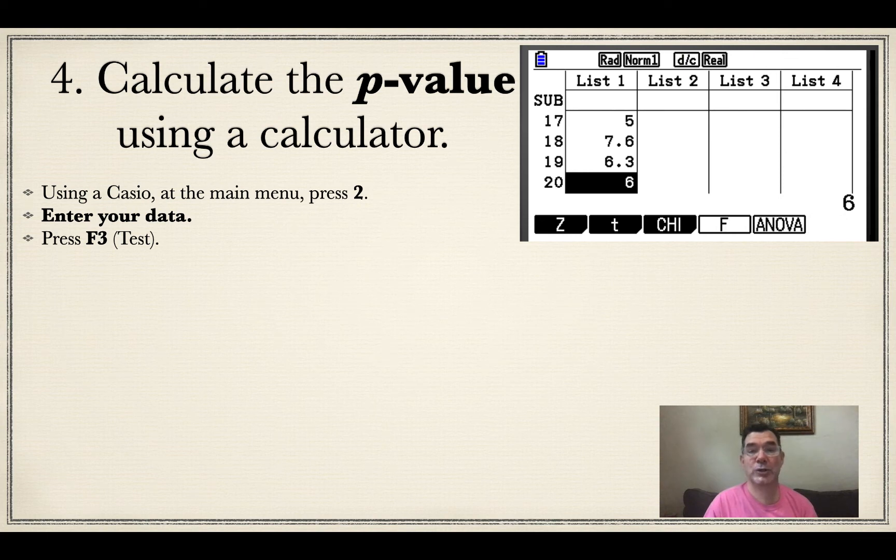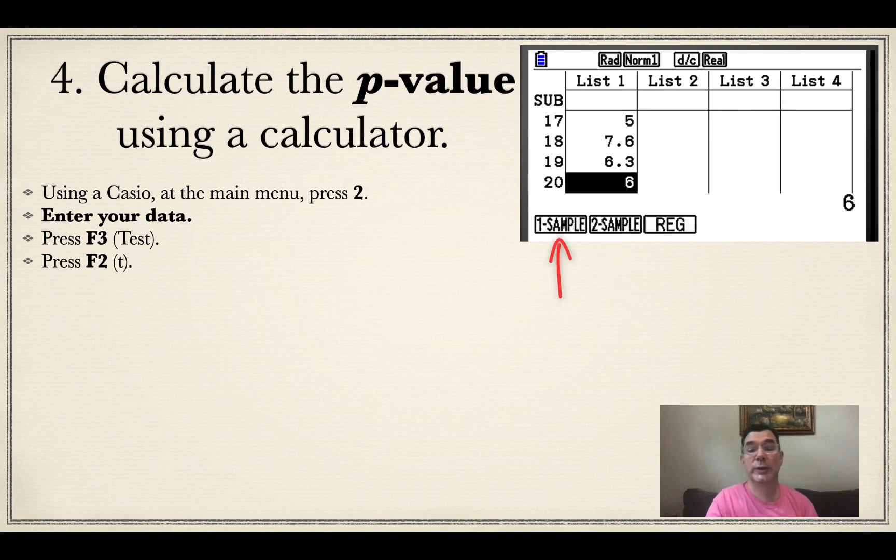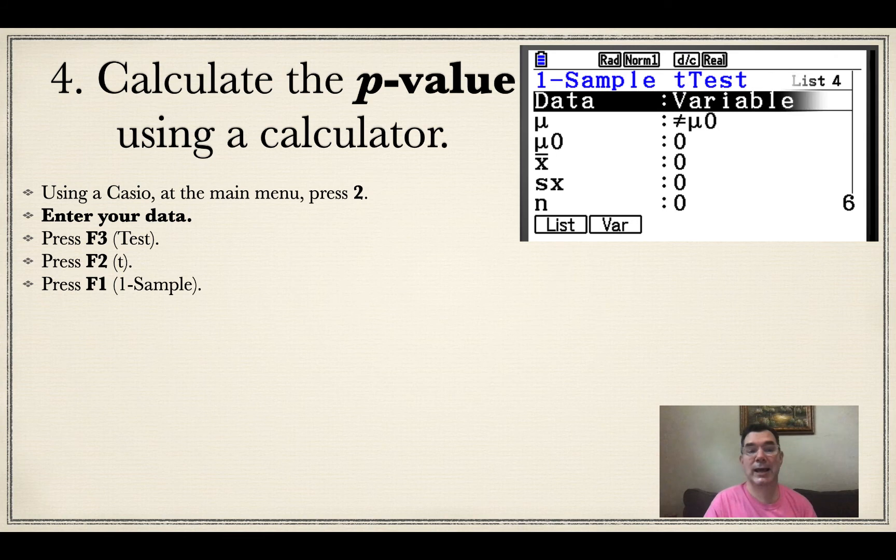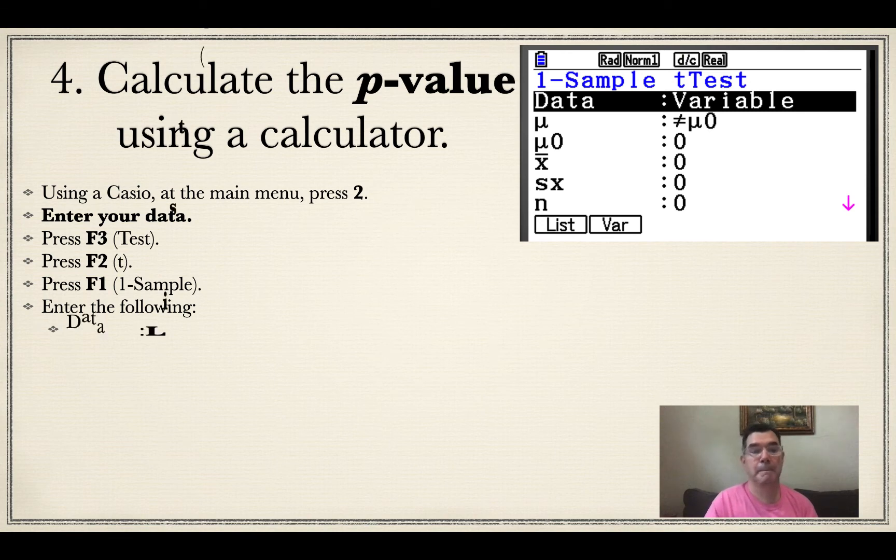I press F3 because I am using a statistical test. There you see the T option for F2, so I'm going to press F2. We still only have one sample, so that's F1. Now I'm going to enter the following. I'm going to use that the data is in a list, and I'm going to press F1 for that.